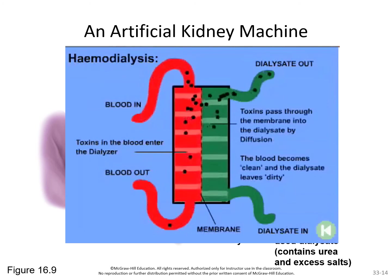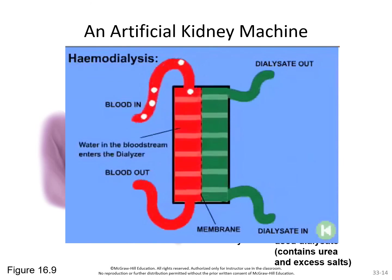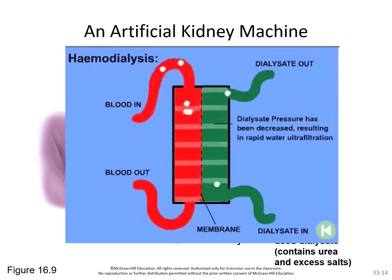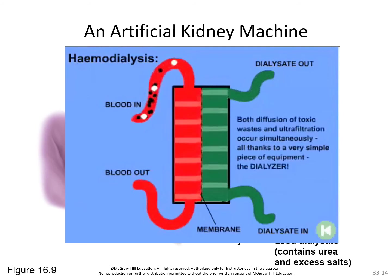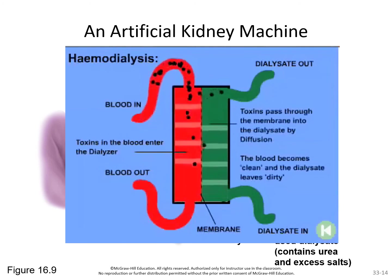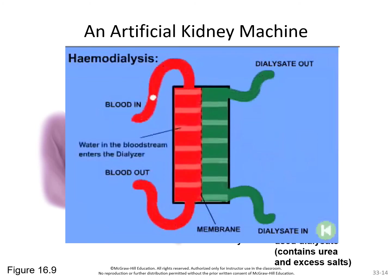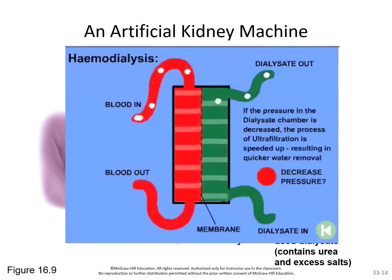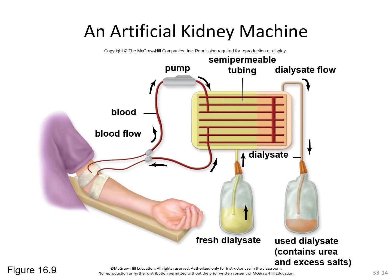Looking at the toxins shown in black, most of them leave early on, but they continue to leave later too. Even as the concentration drops toward the bottom of the diagram, most toxins still leave because the dialysate coming in at the bottom is fresh with no particles in it. The blood and dialysate moving in opposite directions is what makes this process much more efficient.